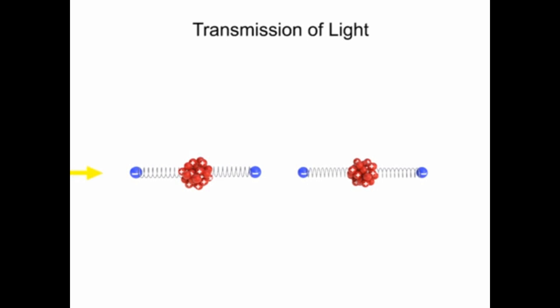When light impinges upon the atoms of a material, its energy is absorbed. This absorption of energy causes the electrons within the atoms to undergo subtle temporary vibrations.